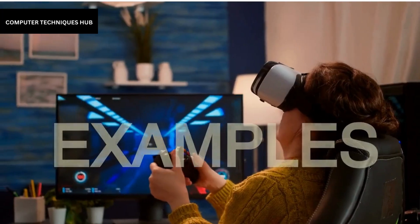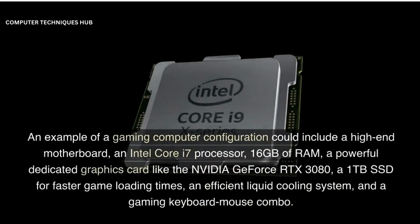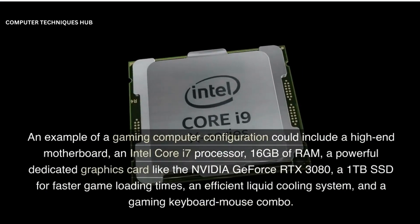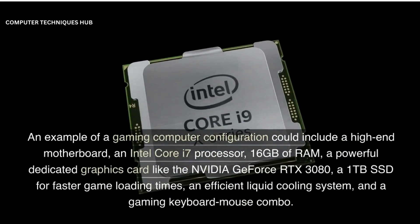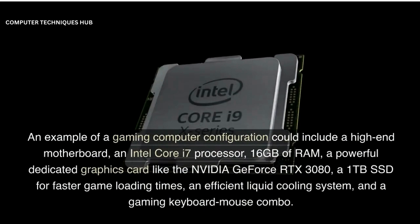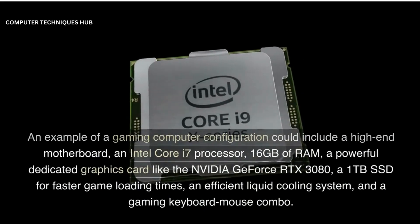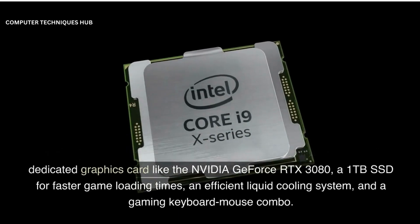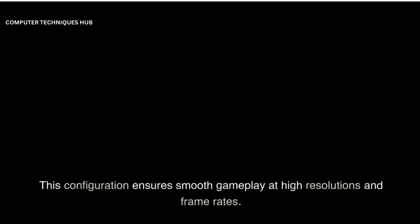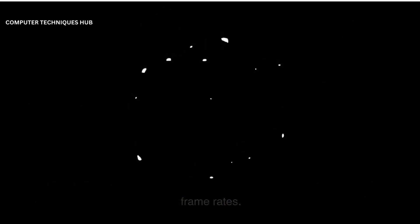An example of a gaming computer configuration could include a high-end motherboard, an Intel Core i7 processor, 16GB of RAM, a powerful dedicated graphics card like the NVIDIA GeForce RTX 3080, a 1TB SSD for faster game loading times, an efficient liquid cooling system, and a gaming keyboard-mouse combo. This configuration ensures smooth gameplay at high resolutions and frame rates.